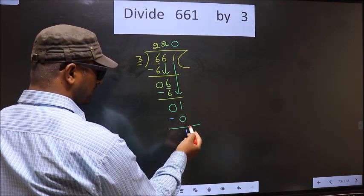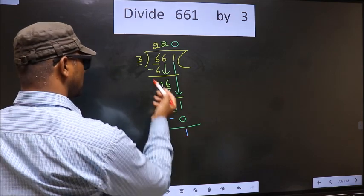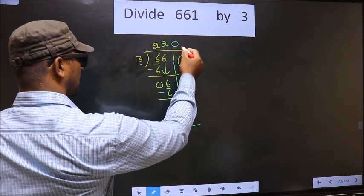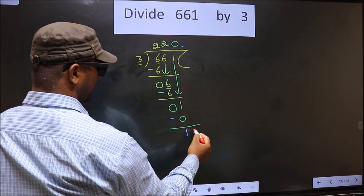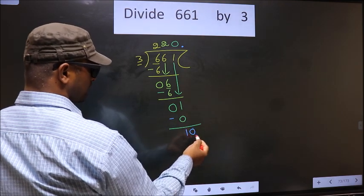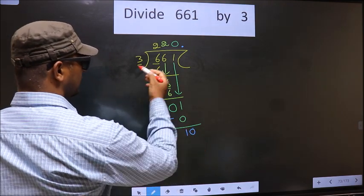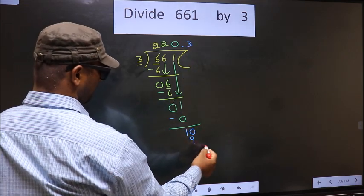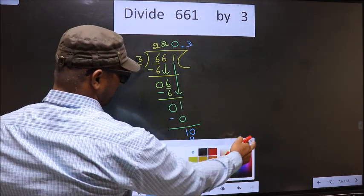Over here we did not bring any number down, and 1 is smaller than 3, so now you can put a dot and take 0 here. So here 10, when do we get 10 in the 3 table? 3 times 3 is 9.